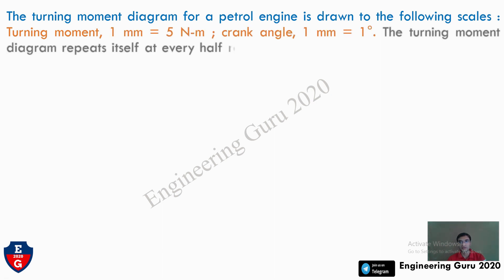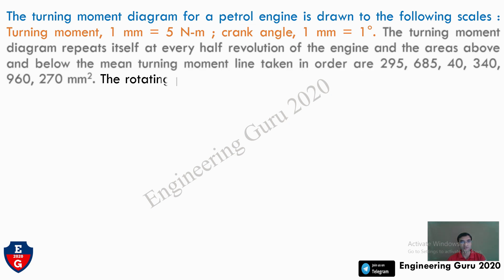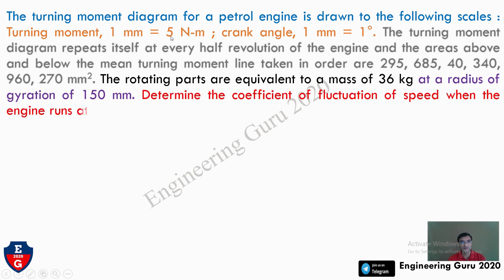The scale is given: turning moment — 1 mm equals 5 Newton·meter; crank angle — 1 mm equals 1 degree. We already covered a video on turning moment diagram, where on the x-axis is the crank angle and on the y-axis is the turning moment value.